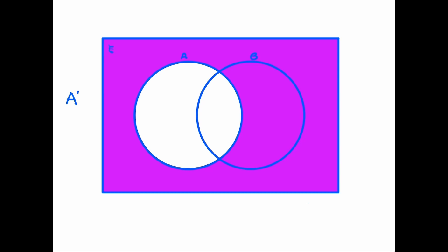Thirdly, this one describes all the numbers that are not in set A — it includes all numbers that do not appear within set A. It's known as the complement, and we use the letter A simply with a little apostrophe at the side. And of course you can have the opposite, where the B circle is white and everything else is shaded in — that would be the complement of B.